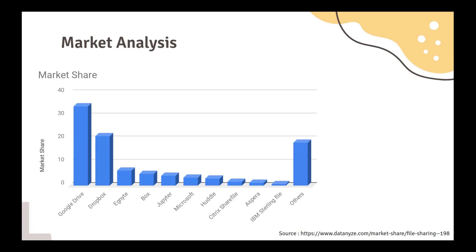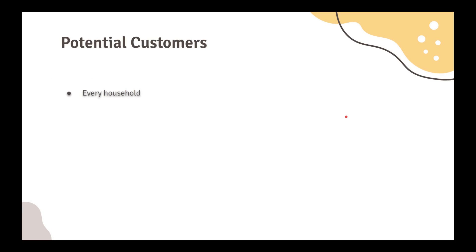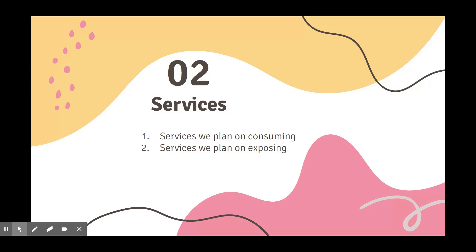Now coming to the market analysis. This graph lists some of the leading cloud services. Google Drive leads the market share with an occupancy of more than 30%, followed by Dropbox with a comparable 20%. We expect to enter the market by offering unique features. It is an openly accepted fact that companies like Google and Dropbox look through files to get user data, mostly to give personalized ads. We at Dumbo are not interested in user data. Providing tags to documents will make retrieval a lot easier compared to the traditional search using file and folder names. Every digitally literate person is a potential customer for our application.